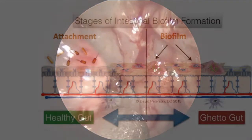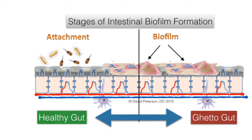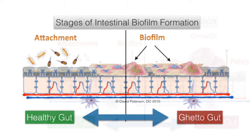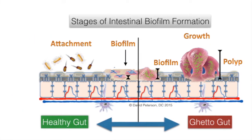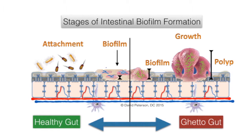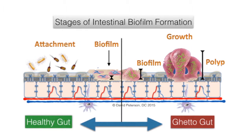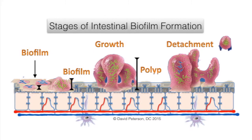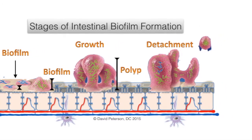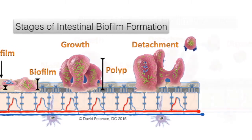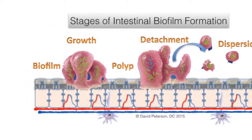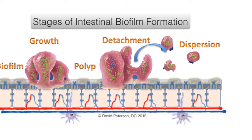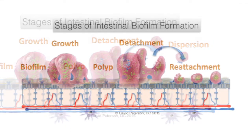The first step in biofilm formation is bacterial attachment to the unprotected surface. The next stage is the growth phase, which should be kept in check by a healthy gastrointestinal environment and the production of digestive chemistry. White blood cells of the immune system do not migrate through the intestines and into the fecal material. If white blood cells were found in significant numbers in the fecal material, it would probably be a case for hospitalization and surgical intervention.